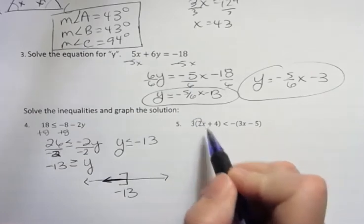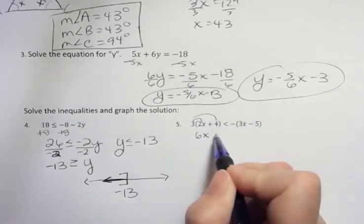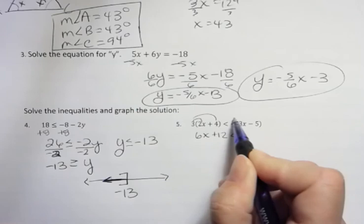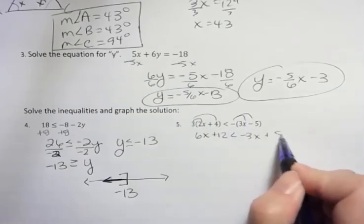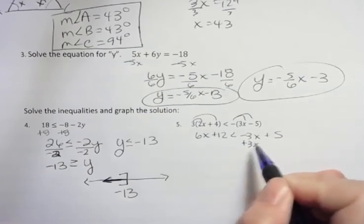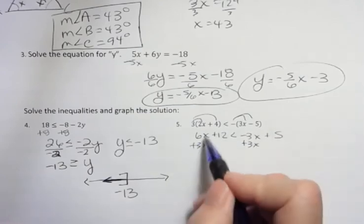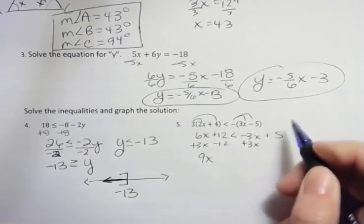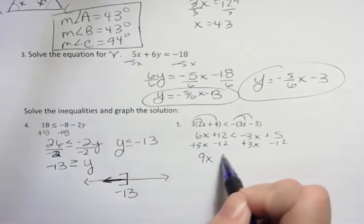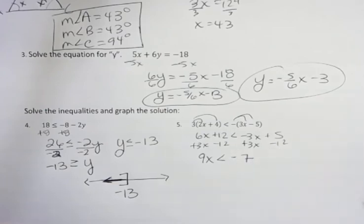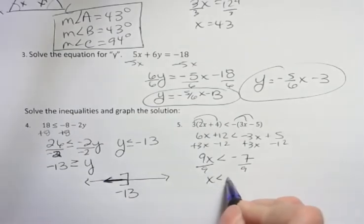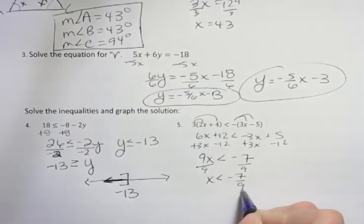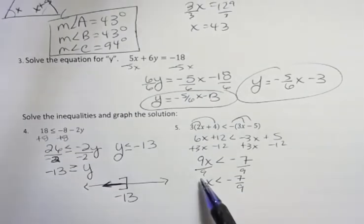Over here, I'm going to do 3 times 2X is 6X. 3 times 4 is 12. Negative 3X. And negative times a negative is positive 5. Now I'm going to add 3X to both sides. That gives me 9X. And I'm going to subtract 12 from both sides. And that gives me negative 7. And divide both sides by the coefficient, which is 9. X is less than negative 7 ninths. I did not flip the arrow there because I didn't divide by a negative. I divided by a positive.